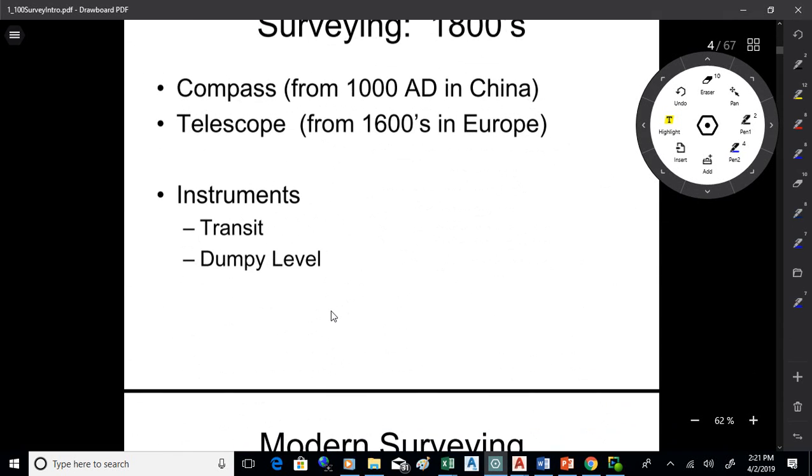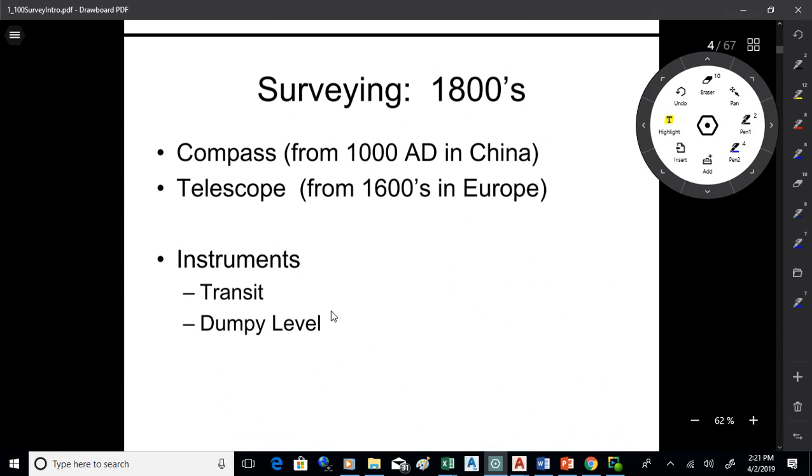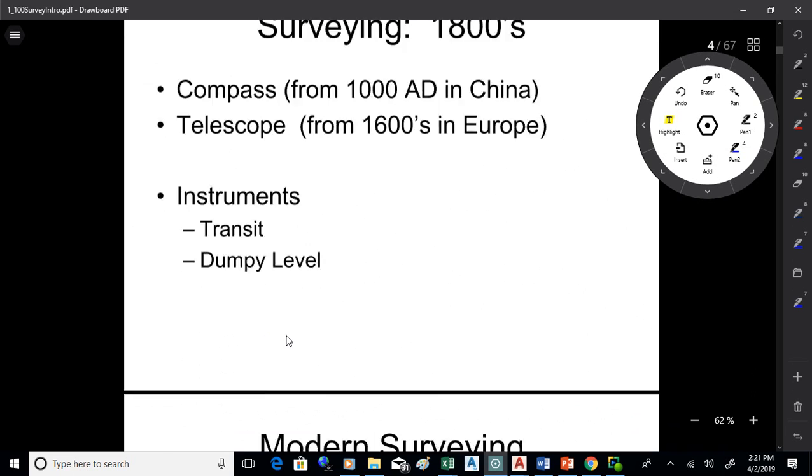For surveying equipment as it developed, compass came in about 100,000 AD in China. Then a telescope from the 1600s in Europe, and they started coming up with some pretty fine instruments now. A transit to measure angles and a level.